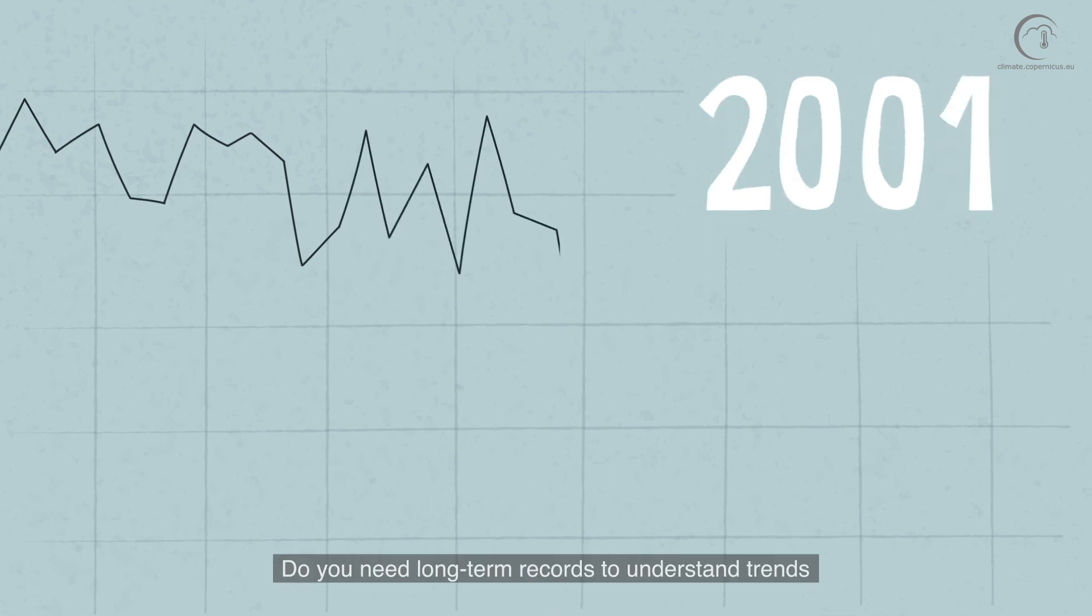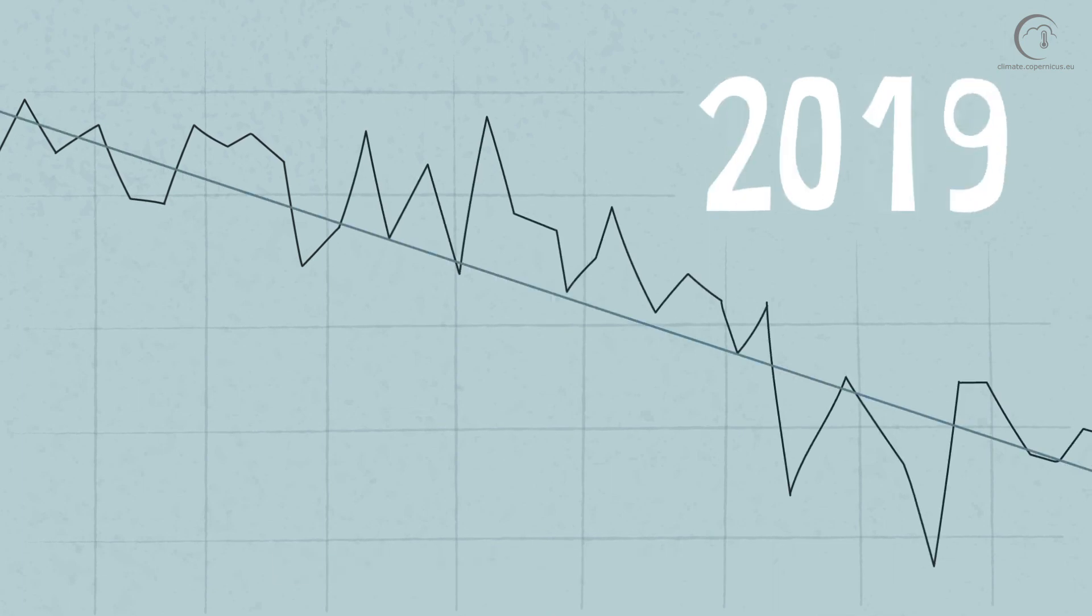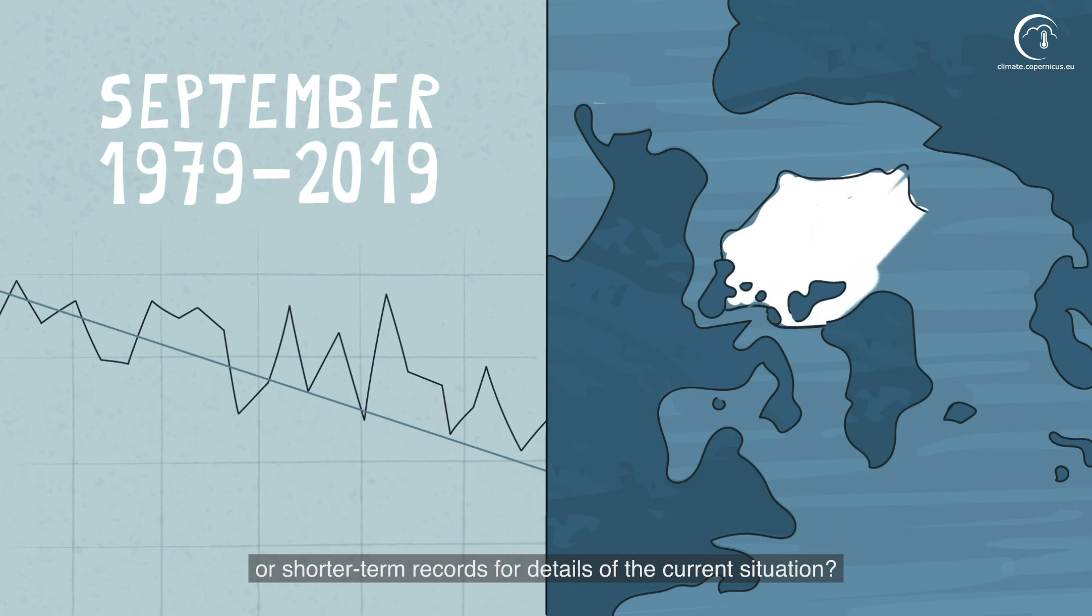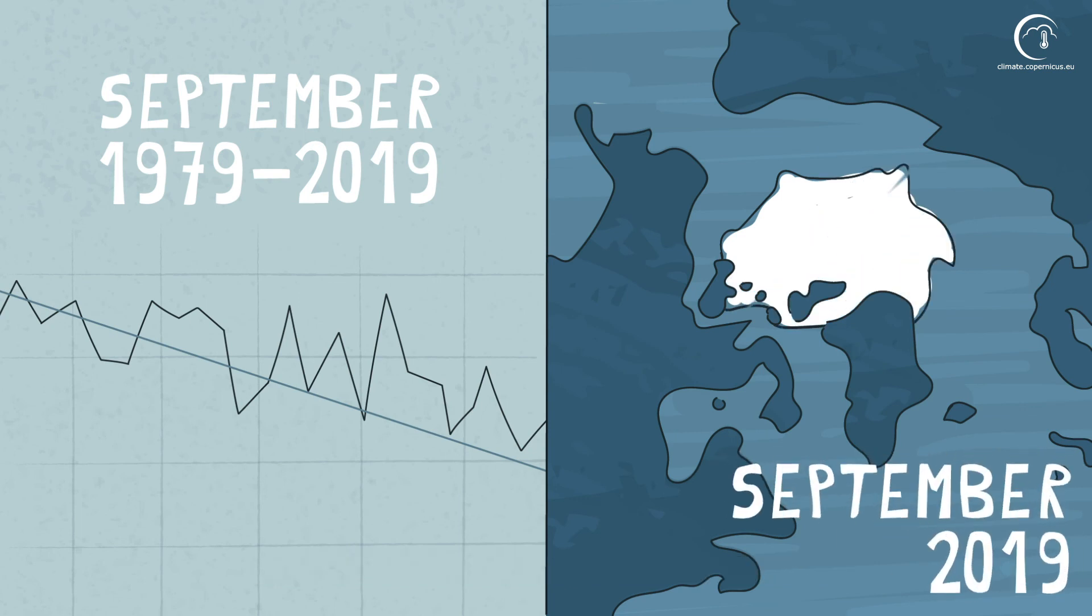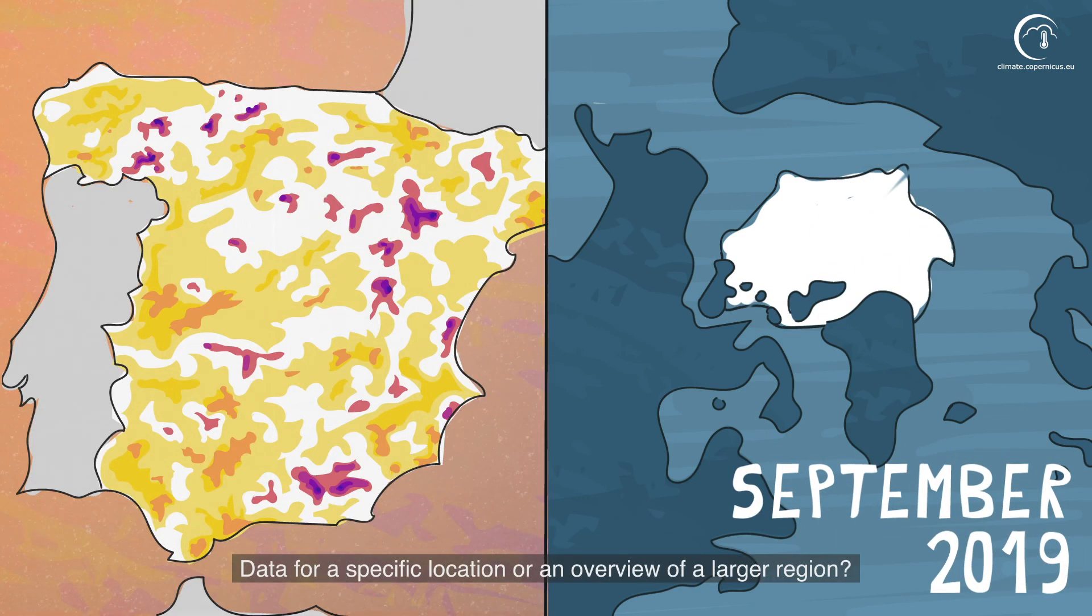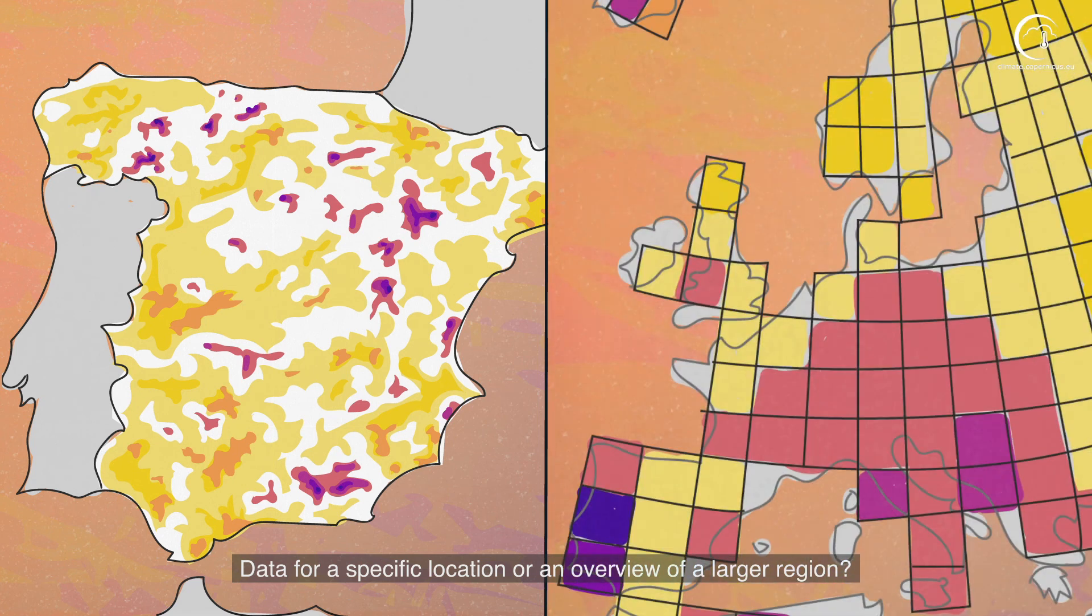Do you need long-term records to understand trends, or shorter-term records for details of the current situation? Data for a specific location or an overview of a larger region?